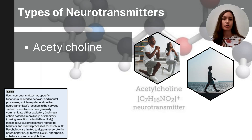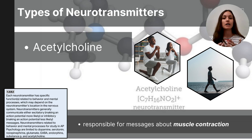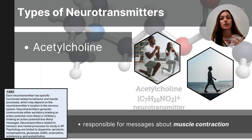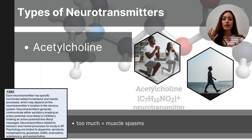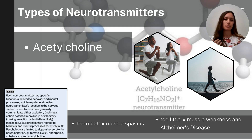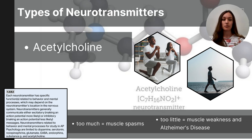Acetylcholine is a neurotransmitter that stimulates muscle contraction by transmitting signals from motor neurons to muscles, and it also plays a role in memory, arousal, and attention. Because some neurotransmitters have overlapping functions, I typically tell students to focus on glutamate for learning and memory and acetylcholine for muscle contraction. Too much acetylcholine can cause muscle spasms, and when it's lacking, people can experience muscle weakness. There are also significant memory issues related to acetylcholine deficiency, most notably Alzheimer's disease.